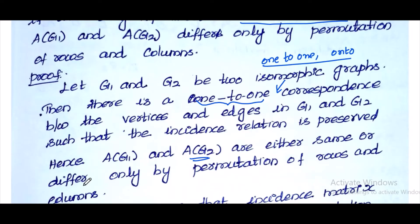For isomorphism, the conditions include: the number of vertices is the same, the number of edges is the same, and the degree of each vertex is the same.